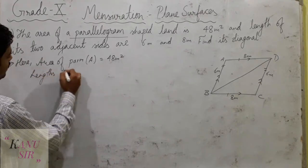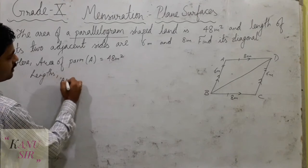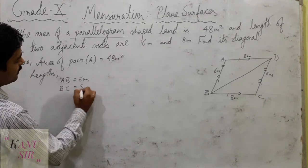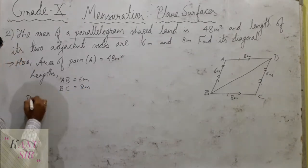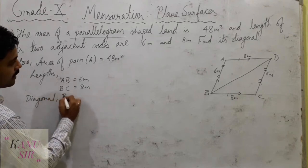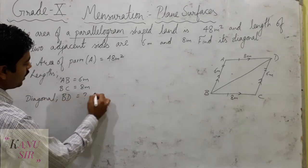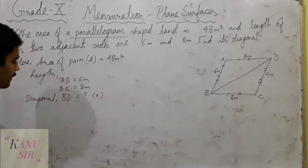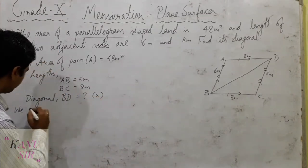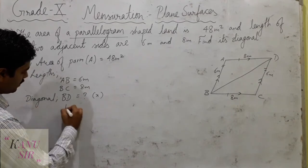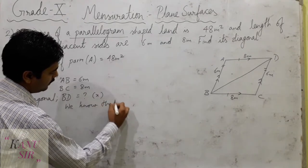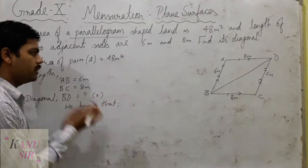Now we have to write the diagonal. Let AB equal 6 meters and BC equal 8 meters. We need the diagonal, which we can denote as BD equals x. We know that we can write here — we need to set up what we know to find this unknown diagonal.